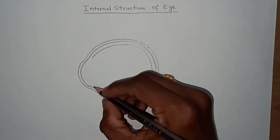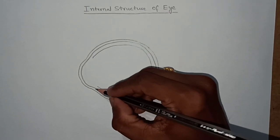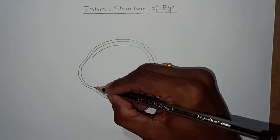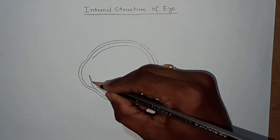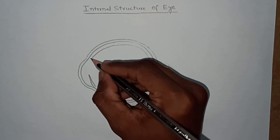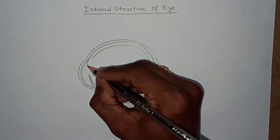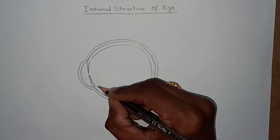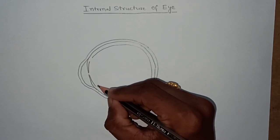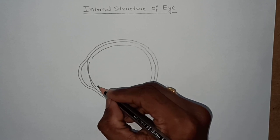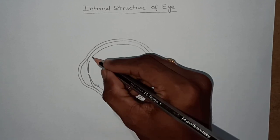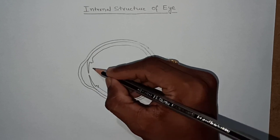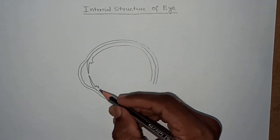And here some extension of the choroid layer we can observe. It is called as iris. And here we can observe that ciliary muscles, here we can observe ciliary muscles and suspensory ligaments.